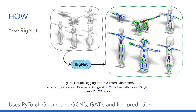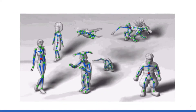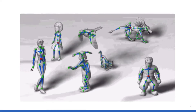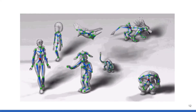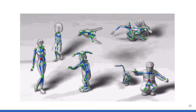Rignet takes as input a 3D model, represented as a 3D graph, and outputs an animation skeleton, or rig, that can be used to animate that model. To do this, it makes use of PyTorch Geometric and popular graph neural network components, like graph convolutional networks, graph attention networks, and link prediction.